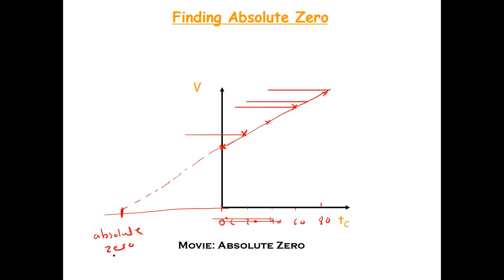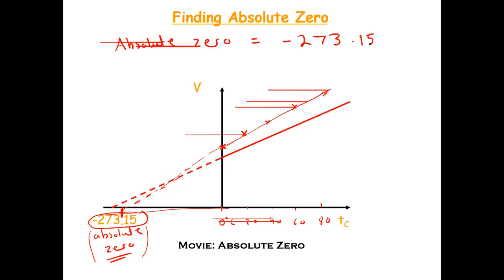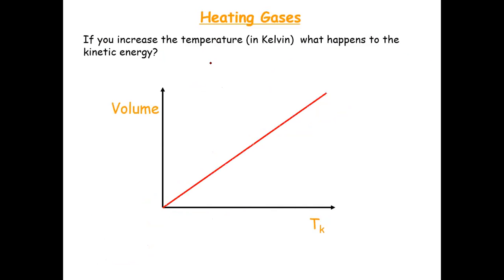He called that temperature absolute zero — the temperature at which something no longer has any heat energy. To this day scientists have never actually achieved absolute zero in a lab; they've got very close but never reached it. Absolute zero turns out to be minus 273.15 degrees Celsius. He then asked: why are we using degrees Celsius if zero Celsius isn't actually zero energy? So he came up with a new scale — the Kelvin scale.